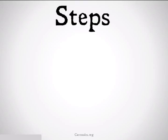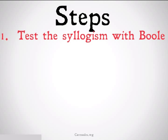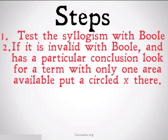The steps in order to determine whether a categorical syllogism is valid for Aristotle are: first, we're going to test the syllogism with Boole. If it's valid for Boole, it's going to be valid for Aristotle, and we're done. However, if it's invalid with Boole and it has a particular conclusion, we're going to look for a term with only one area available, and then we're going to put a circled X there.